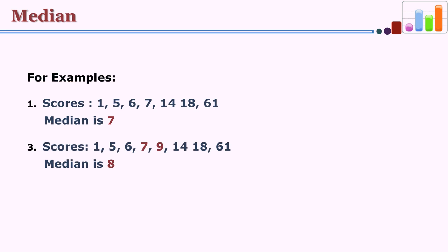Another major measure of central tendency is median. Median is found exactly in the middle of the distribution. To find the median, we locate the midpoint and identify which score is located there. For example, with 7 scores arranged in ascending order — 1, 5, 6, 7, 14, 18, and 61 — the midpoint is the 4th score, which is 7. So the median of this distribution is 7.